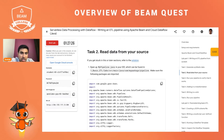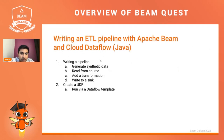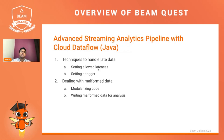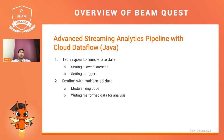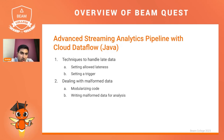The second lab is essentially an advanced streaming analytics pipeline running on Cloud Dataflow. This delves deeper into more advanced concepts. For example, we'll cover techniques to handle late data — setting the allowed lateness and setting a trigger. Secondly, we'll be dealing with malformed data: how we can modularize our pipeline code to best handle this, and writing our malformed data for analysis, which is analogous to dead letter analysis.